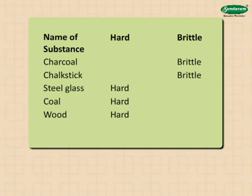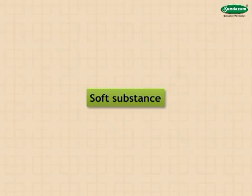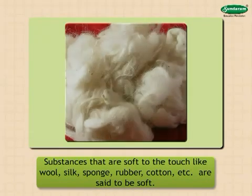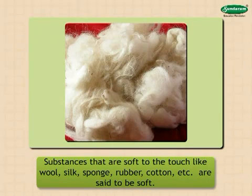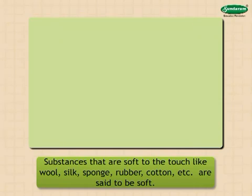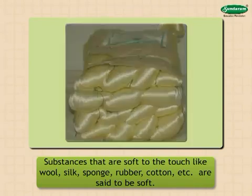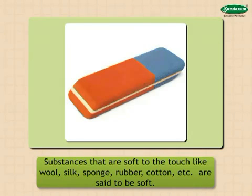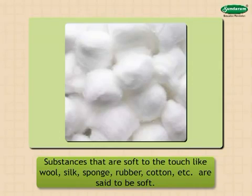Now that we have seen hard and brittle substances, let us see what soft substances are. Soft substances are substances that are soft to touch, like wool, silk, sponge, rubber, cotton, etc., and are said to be soft.